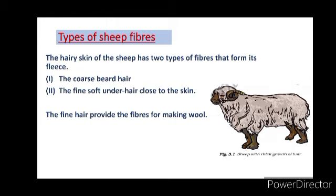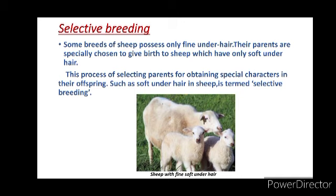Only some breeds of sheep possess fine under hair. Their parents are specially chosen to give birth to sheep which have only soft under hair. This process of selecting parents for obtaining special characters in their offspring, such as soft under hair in sheep, is termed as selective breeding.